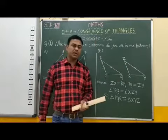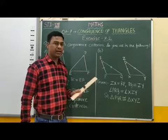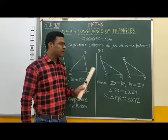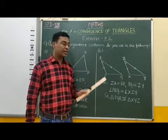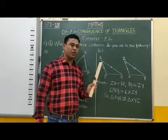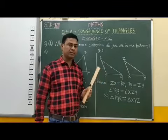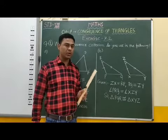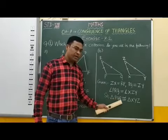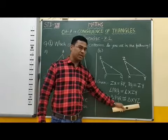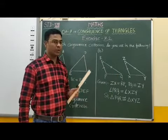Therefore, students, we observe here that two sides and the angle between them of one triangle are equal to the corresponding two sides and angle between them of another triangle. Then these two triangles are congruent by the Side-Angle-Side congruence criterion — that is, the SAS congruence rule. Therefore, triangle PQR is congruent to triangle XYZ by SAS congruence criterion.